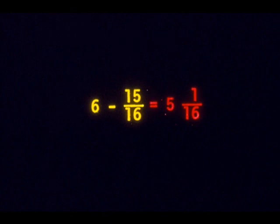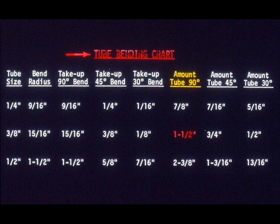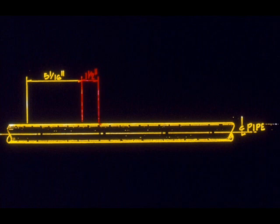First, take the length of the first leg — six inches — and subtract the take-up, which is fifteen-sixteenths. Your answer is five and one-sixteenths. Make your first mark on the pipe. This is the length of the first leg to the point where the bend begins. Since this is a ninety-degree bend, you will need one and one-half inches to complete the bend. Add one and a half inches to the first mark and make your second mark. This mark shows the end of the first bend.